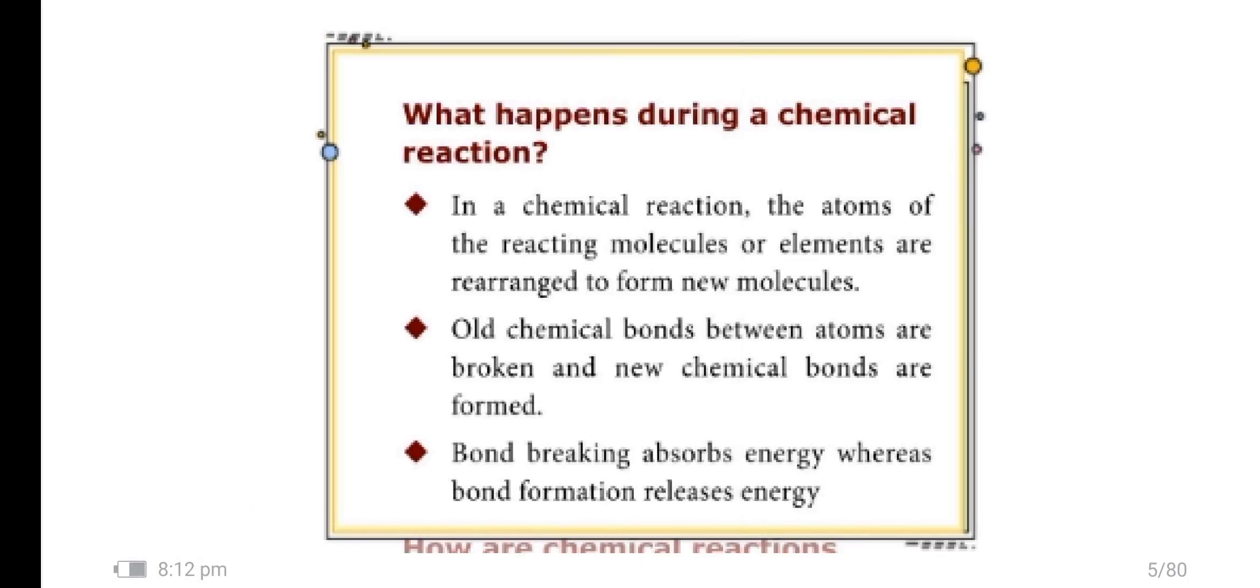What happens during a chemical reaction? In a chemical reaction, the atoms of reacting molecules or elements are rearranged to form new molecules. Old chemical bonds between atoms are broken and new chemical bonds are formed.